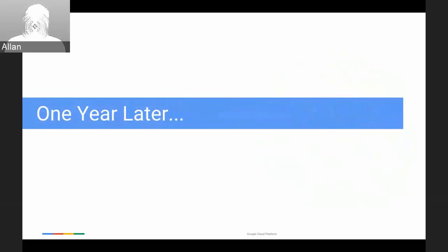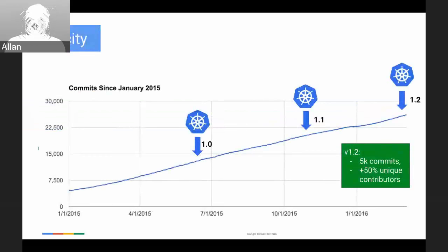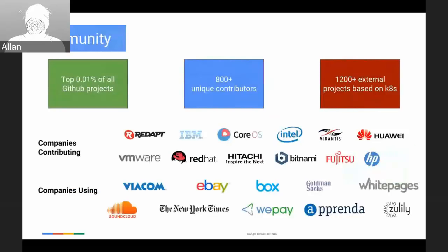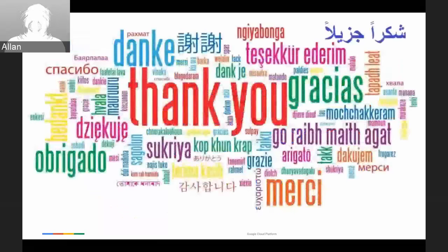Kubernetes GA'd back in July 2015 — that was when we announced our 1.0 version — and since then the adoption rate has been phenomenal. Our latest version, 1.2, had 5,000 commits and a 50% increase in unique contributors, which is just phenomenal. All of this is really driven by the community. We are in the top 0.01% of all GitHub projects, with 800+ unique contributors and over 1,200 external projects based on Kubernetes. Thank you for making this happen.